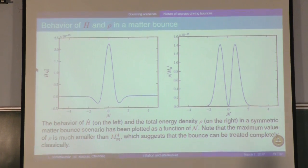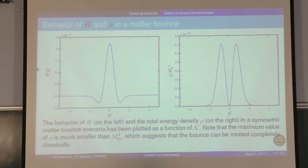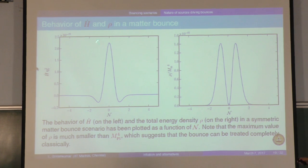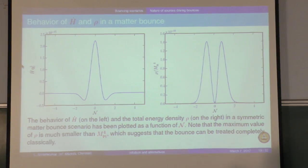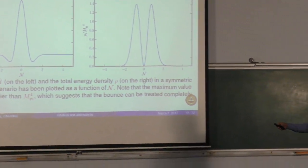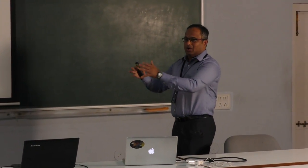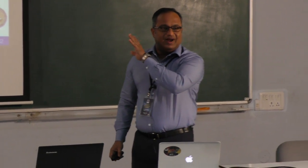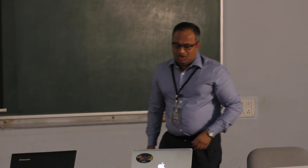Here is the behavior of H-dot and rho. Remember, H-dot equals minus rho plus P, so very close to the bounce, H-dot is positive. H-dot has to be negative if you don't want to violate the weak energy condition. The weak energy condition has to be violated around the bounce for a very small period of time, and this is where the negative rho plays a role. The total rho remains positive, vanishes at the bounce, and the maximum value is much smaller than the Planckian energy density — so I can consider this bouncing scenario to be completely classical. There is only one parameter in the problem: the value of the scale factor at the bounce, which essentially determines the amplitude of the two-point function.